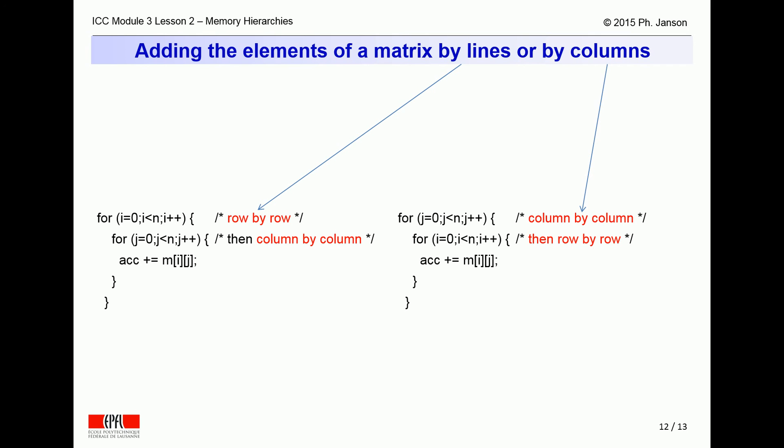By contrast, if the program adds the elements column by column in a row by row memory layout, the program will need to import the matrix elements into the cache in an order that is completely orthogonal to the memory assumptions of spatial locality. And the resulting performance will be catastrophic.